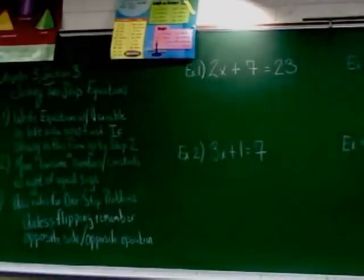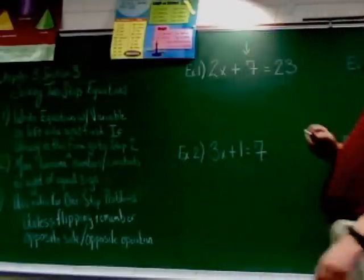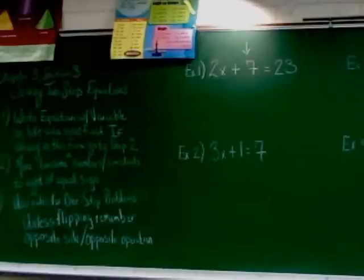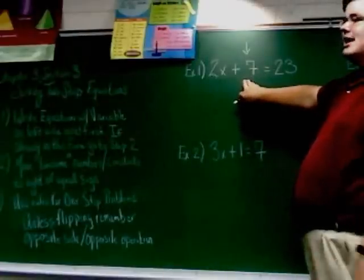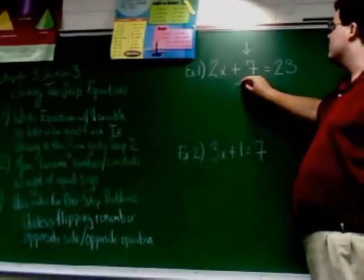Step 2: Move the lonesome numbers, or constants, to the right of the equal sign. So we do have a lonesome number here. That would be the 7. Lonesome, because there's nothing else with it, no variable. So I need to move it to the right side. Since I'm going to the opposite side, I have to use the opposite operation. So there's a plus in front of it. The opposite then, of course, would be to subtract. So I have to subtract 7 from both sides.